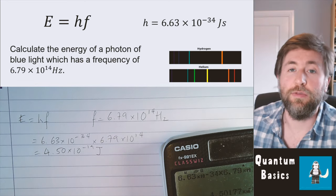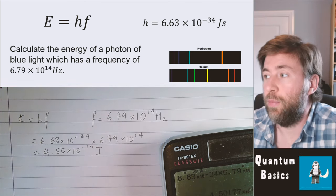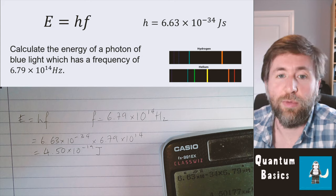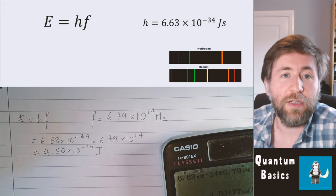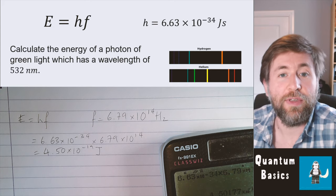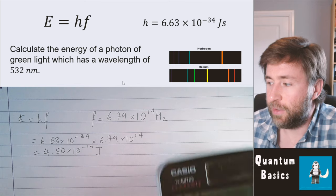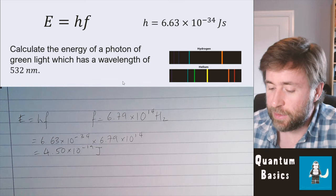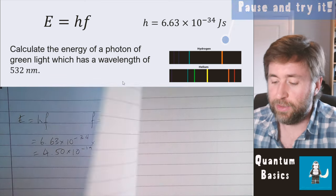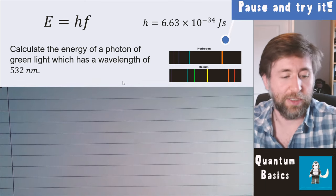Substituting the values in gives 4.50 times 10 to the minus 19 joules. That's a really simple one — that might just be one mark in an A-level paper. Slightly more complicated: what if they've given you a wavelength? The first thing you need to do is convert between frequency and wavelength.